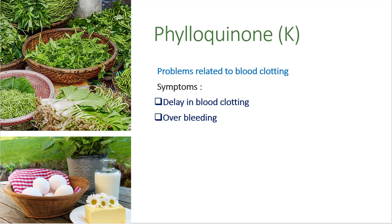Another vitamin is vitamin K — the chemical name is phylloquinone. Vitamin K deficiency leads to delay in blood clotting and over-bleeding when we get wounds. To overcome this problem, we should eat leafy vegetables, eggs, liver, meat, and milk.